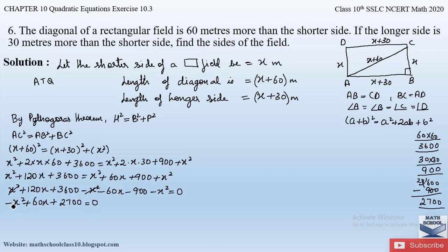Multiplying the whole equation by −1 to make the x² term positive, we obtain: x² − 60x − 2700 = 0. This is our quadratic equation.